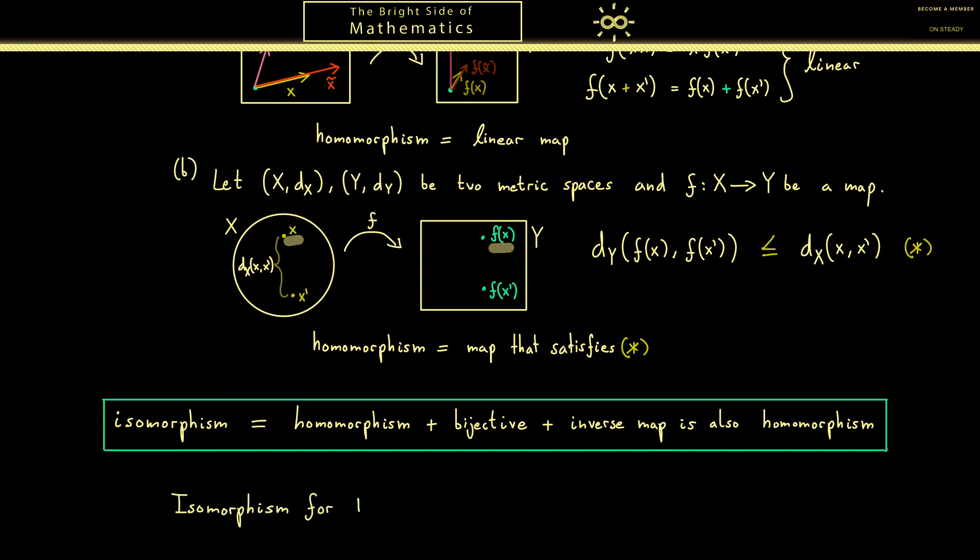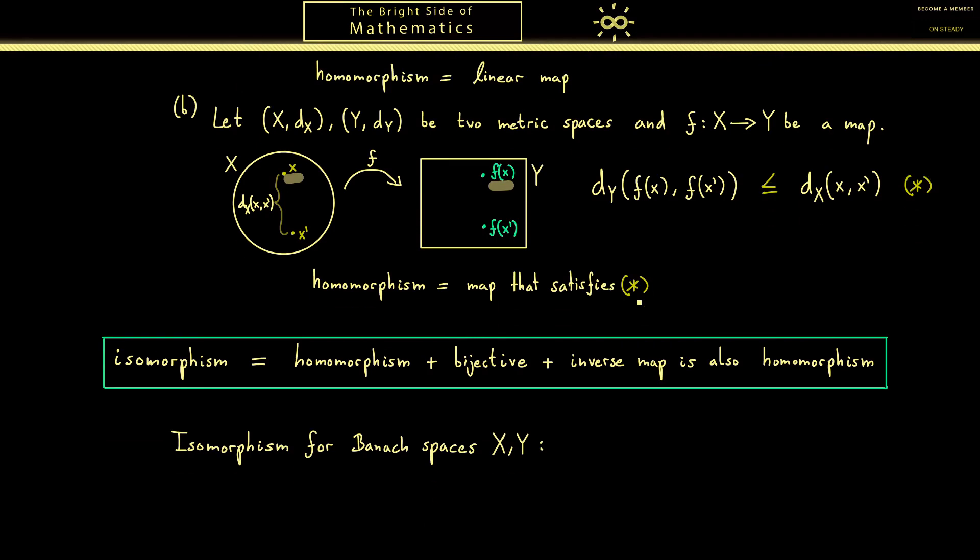For us it will be now very important to look at isomorphisms when we have the structure of Banach spaces. For this case there comes in a lot of confusion because a Banach space is of course also a vector space. So when you say isomorphism you could just mean a normal vector space isomorphism. In other words a linear bijective map. However because we also have the norm we want to preserve that in the same way as we preserve the metric here. This means that for an isomorphism we have the equality here as well.